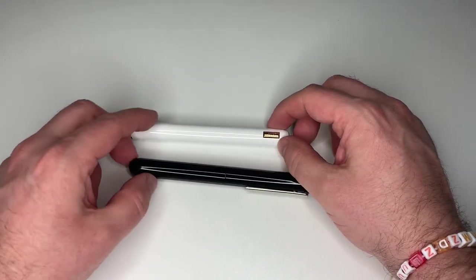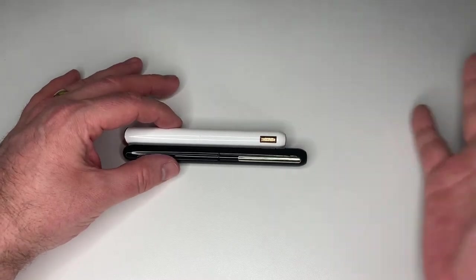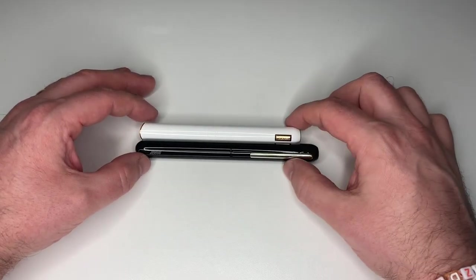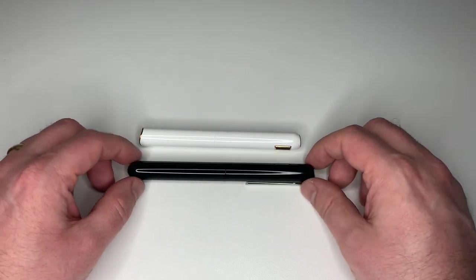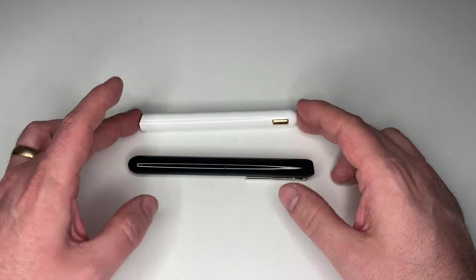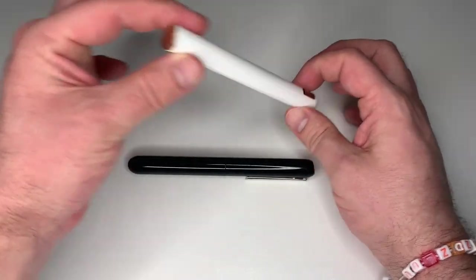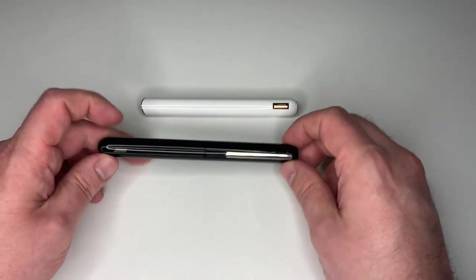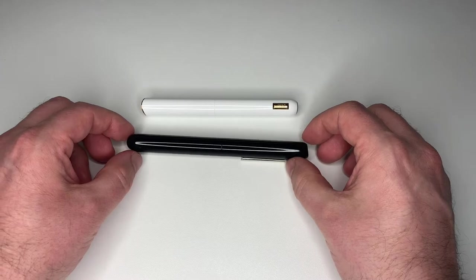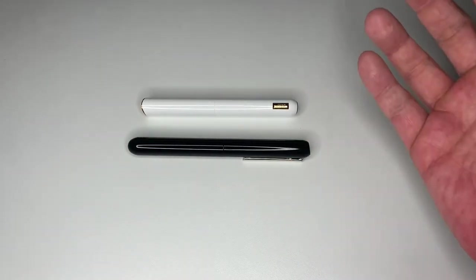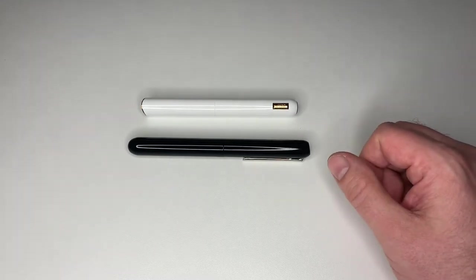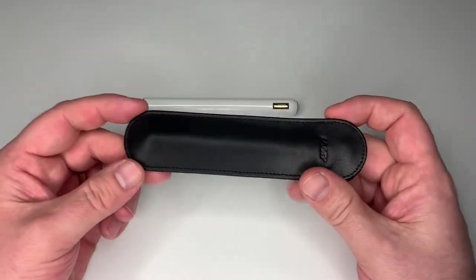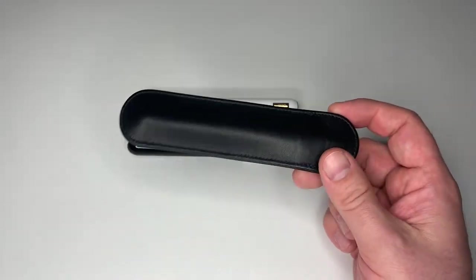Price-wise they are both the same, both slightly north of 300 euros. I think between 300 and 330 euros depending on where you buy them. I think at Apple Boom they retail for 330 euros, both of them. Which you prefer is pretty much up to you and what you like. I personally like the design, the look, and especially the length of the Dialogue CC a lot better, but I dislike the clipless design. I find the clip extremely useful because I tend to carry my pens in a pen pouch.